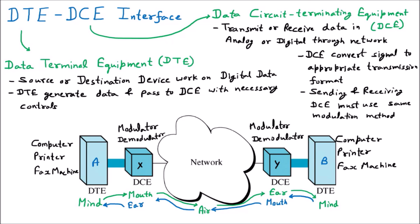If DCE X and DCE Y are communicating, they should both agree on and use the same modulation method. To summarize: DTE — computer, printer, fax machine — generates digital data and passes it to the DCE. DCE — modulator or demodulator — sends the data to another DCE, which further passes it to another computer, printer, or fax machine. Both the sender and receiver DCEs must use the same modulation method, and signal conversion is handled by the DCE.